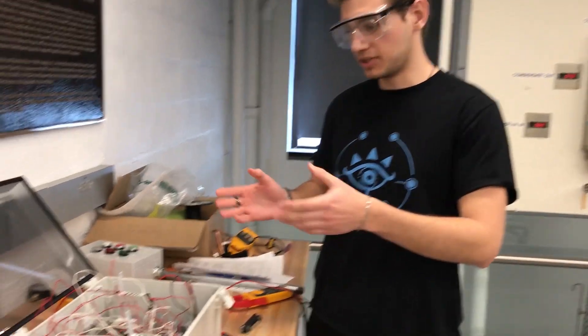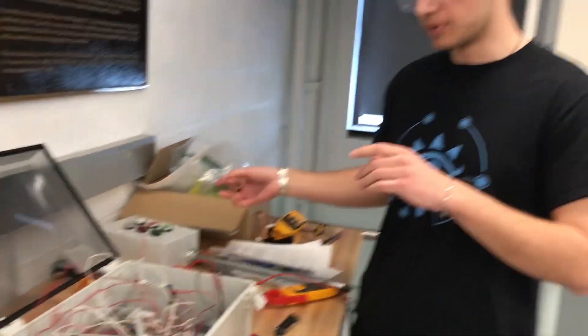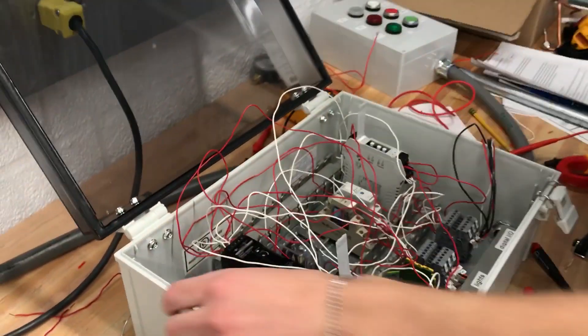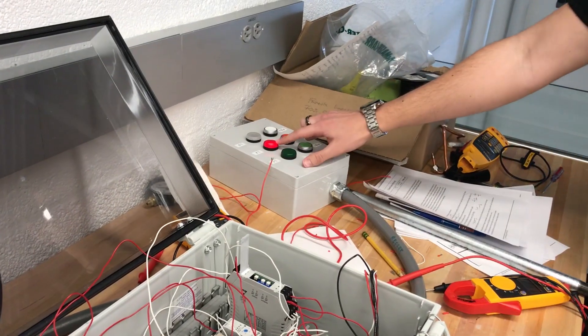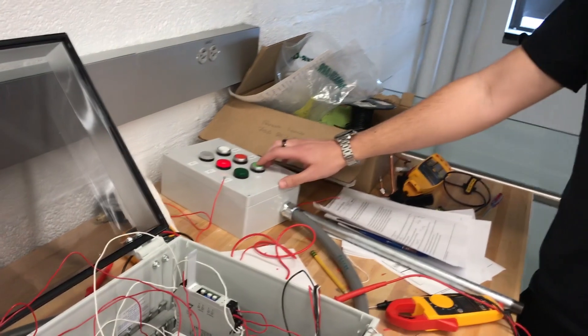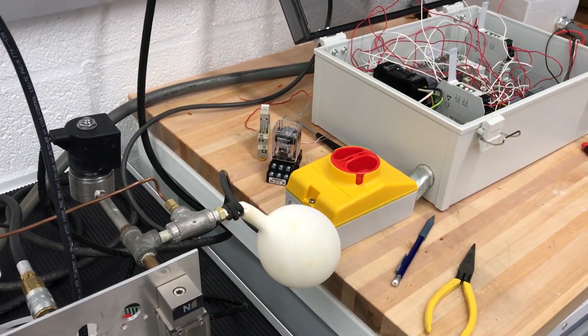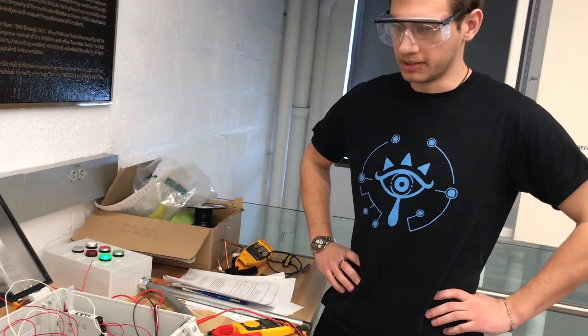So now we're going to demonstrate the use of the red push button for our manual stop and override. Flip the breaker on, this is our ready state light. Push the button, it gets started, we're starting to inflate the balloon, and we're going, we're going.